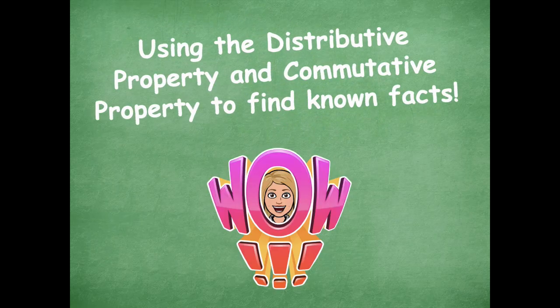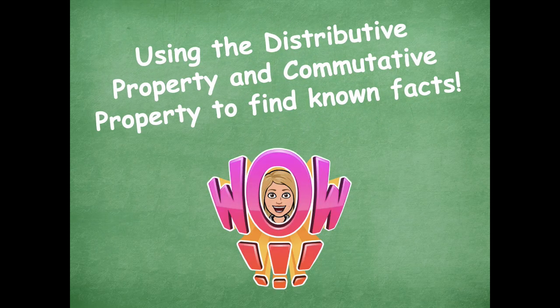Okay, so wow, you guys did a great job using the distributive property and the commutative property to find known facts. We used those known facts of fives to help us solve for larger facts with sixes, sevens, eights, and nines today — you guys rocked it! Please head back on over to the module to see what you need to complete for your independent practice. If you have any questions, please let me know. I'd be more than happy to help. I hope you guys have a great rest of your day!